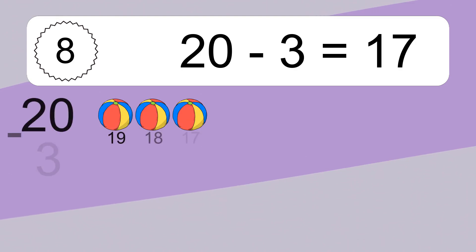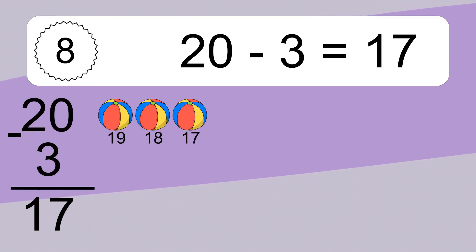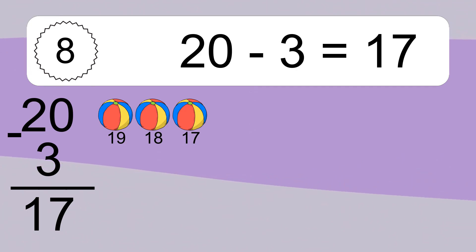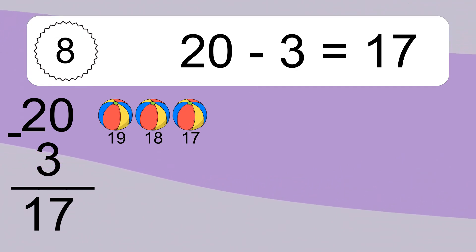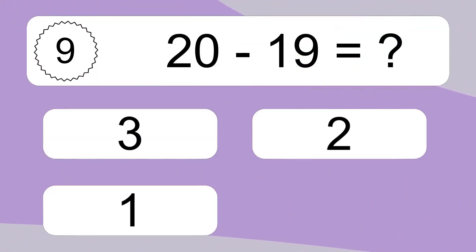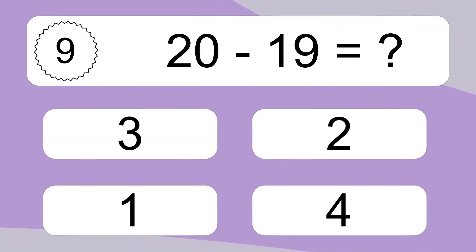20 minus 3 equals what? 20 minus 3 equals 17. Let's count it: 19, 18, 17.